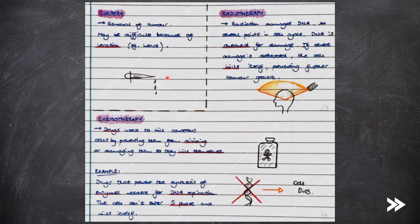Finally, we have chemotherapy, where drugs are used to kill cancerous cells by preventing them from dividing or damaging them so that they kill themselves. For example, drugs that prevent the synthesis of enzymes required for DNA replication. The cell hereby can't enter the S phase and kills itself.